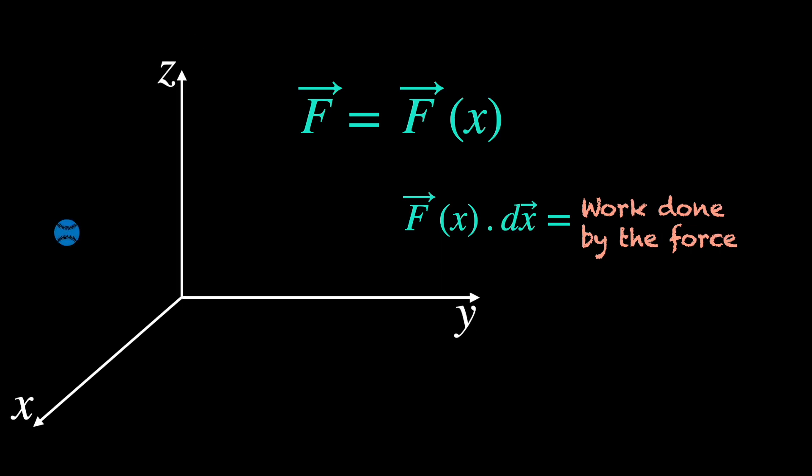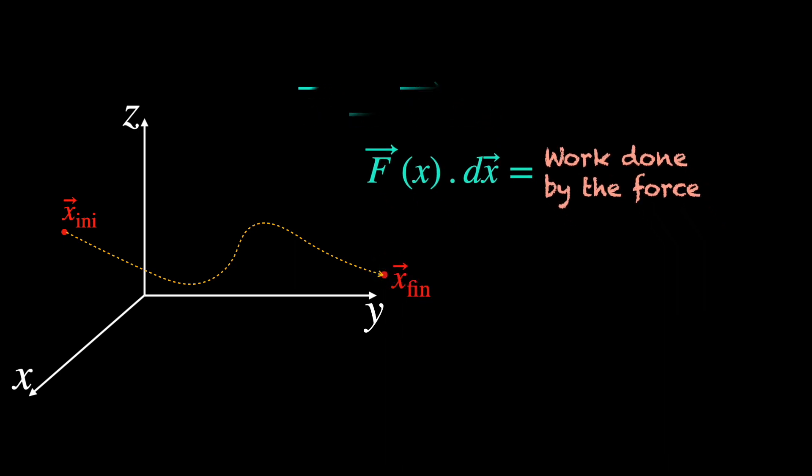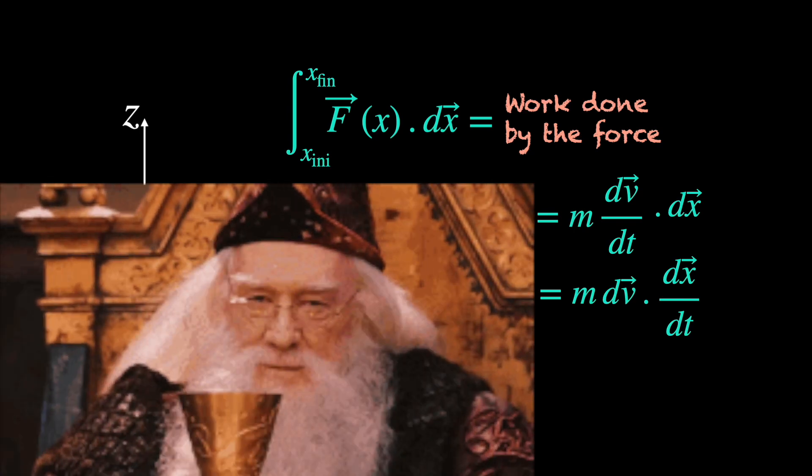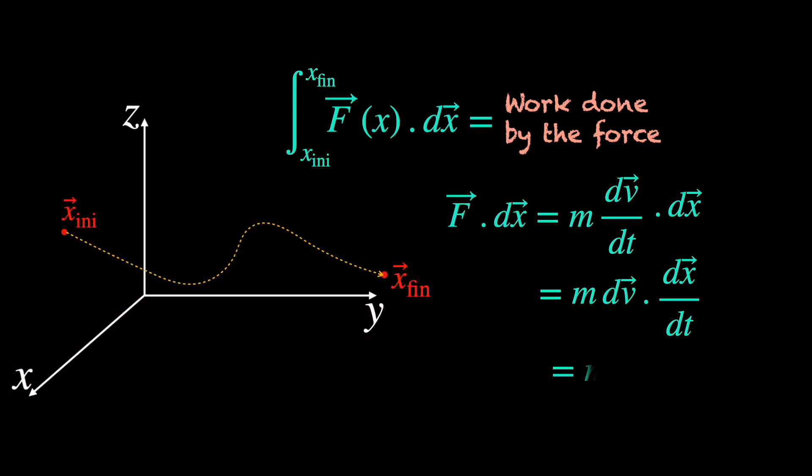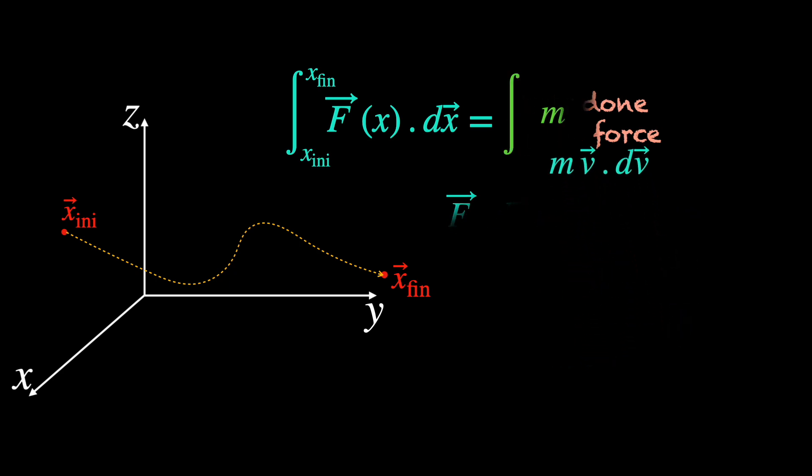Alright, so if the object is pushed from some initial location x initial to some final location x final, the total work done on it is the integral of f dot dx with x initial and x final as the integration limits. Now, using the second law in the integral, we can write f dot dx as m dv dt dotted with dx, which is same as m dv dot dx dt. In physics, we often take such liberties with infinitesimals. Since dx dt is v itself, this way we can convert the f dot dx integral into mv dv, an integral over the velocity.